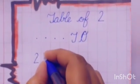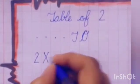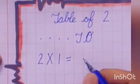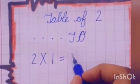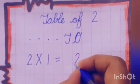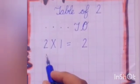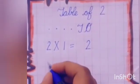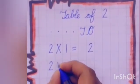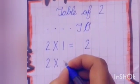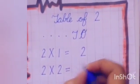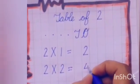Two 1s are 2. See, kids — 2 is a single digit. So we will not write it under 10s. We will write it under 1s. 2 2s are 4. Again, 4 is a single digit.